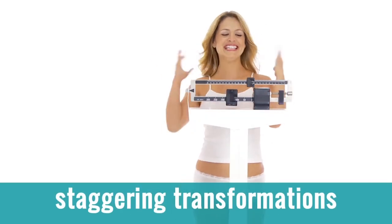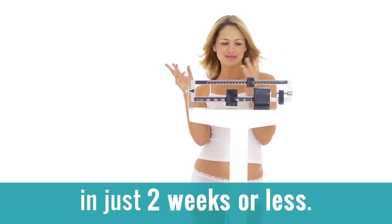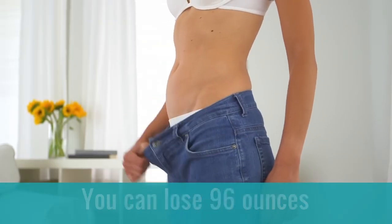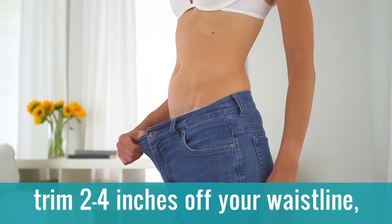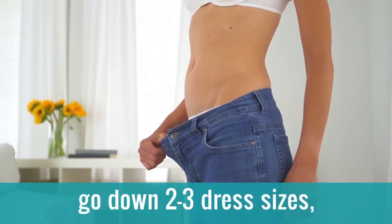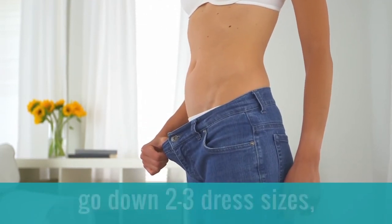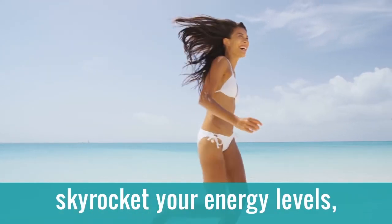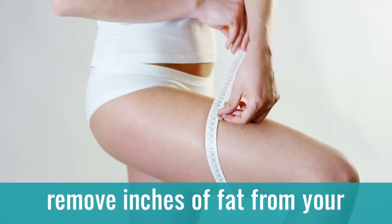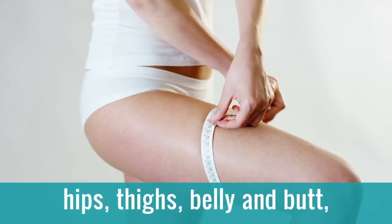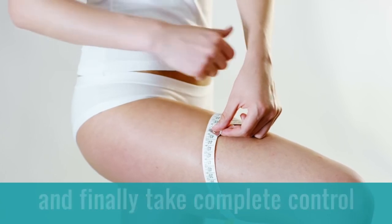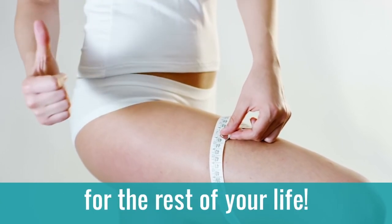I'm talking about staggering transformations in just two weeks or less. You can lose 96 ounces of pure body fat, trim two to four inches off your waistline, go down two to three dress sizes, develop a flatter stomach, boost your metabolism, skyrocket your energy levels, remove inches of fat from your hips, thighs, belly, and butt, and finally, take complete control of your body weight for the rest of your life.